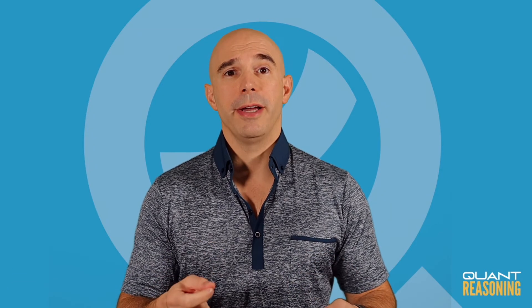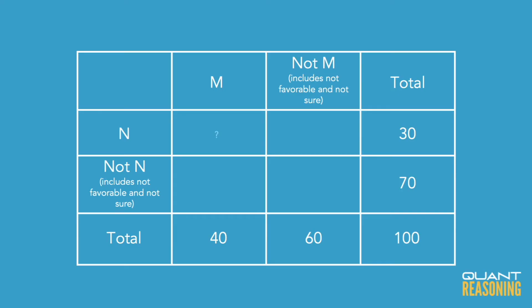The most challenging aspect of this question is getting the diagram right. The total number of people who found M favorable is 40, and the rest is 60, for a total of 100. For N, the number who found N favorable is 30, the rest is 70, and the total is 100. The question wants to know the number of people who found both candidates favorable, so we're looking for that both-and cell — the top left cell in our diagram.